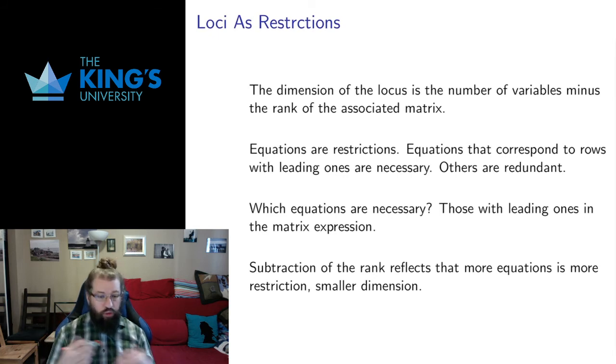With spans, we expect them to be built up, and if all the directions are independent, we expect the span dimension to just be the number of directions. With loci it's the other way around. If all the equations are independent, we expect that many restrictions, and each restriction drops the dimension by one. But we have the same problem of redundancy.